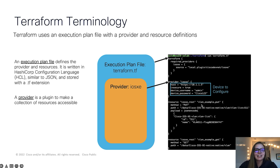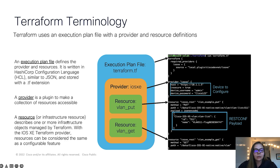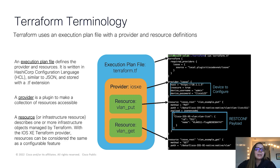Next, we have some resources to define what we actually want to do and configure on this device. A resource is describing something that we want to essentially change or configure. In the case of IOS Xe, we can think about resources as essentially being features that we would like to configure. In this case, we have a VLAN that we would like to create.